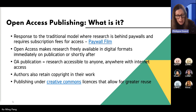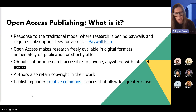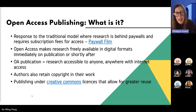Publishing open access seeks to make research freely available, either immediately on publication or shortly after, enabling widespread access across the globe and to those outside academia too. It means that research publications are immediately available to anyone with Internet access. It also means that authors can retain copyright in their work, and open access publications use Creative Commons licenses, which allow for greater reuse.